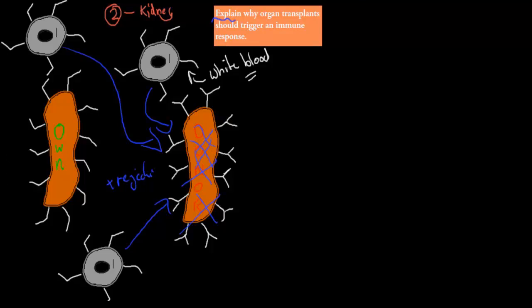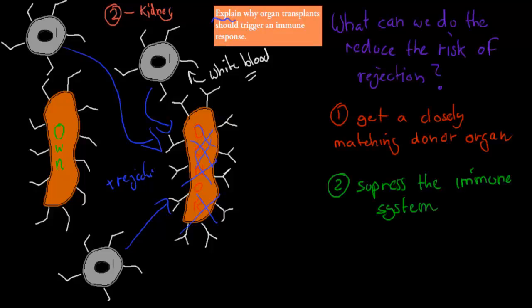But what could we do to try to minimize the risk of this happening? Because I mean we do need to do organ transplants. What could we do to try to minimize the risk? Well we could, for example, so I wrote here, what can we do to reduce the risk of rejection?